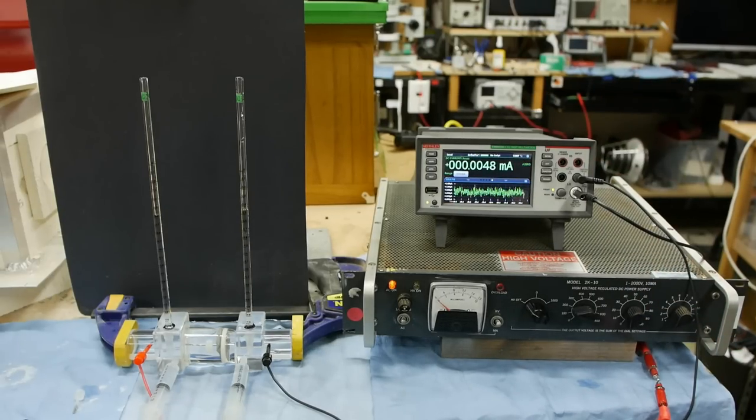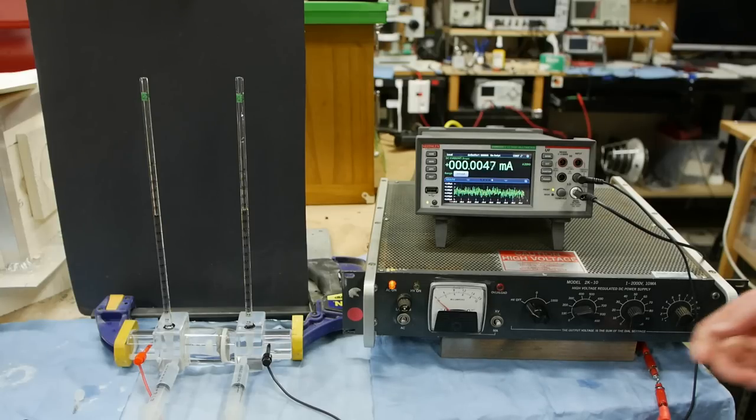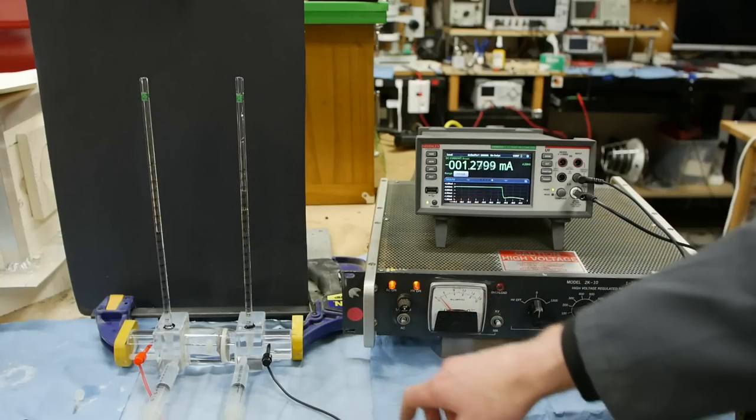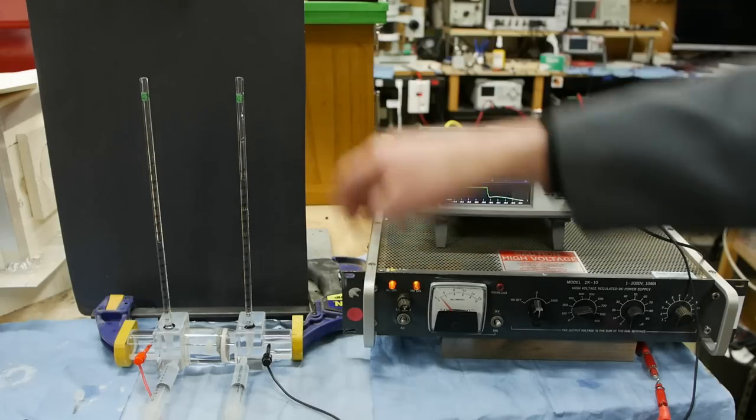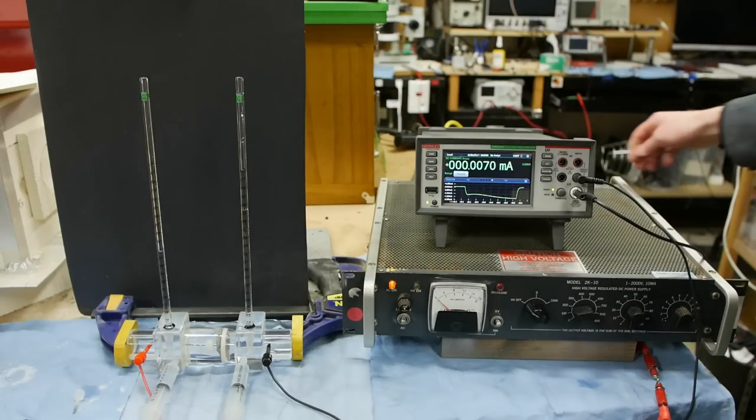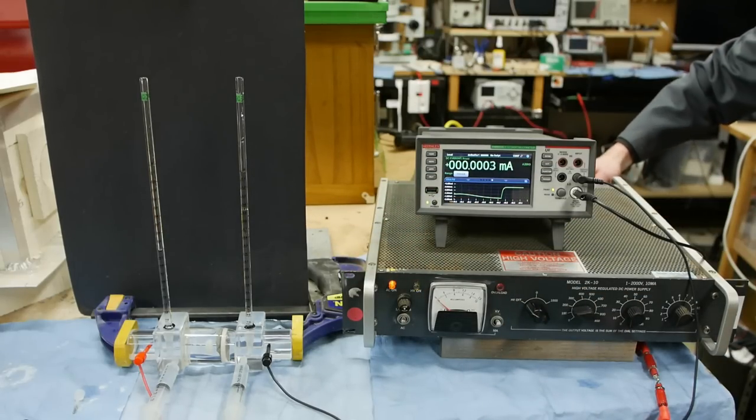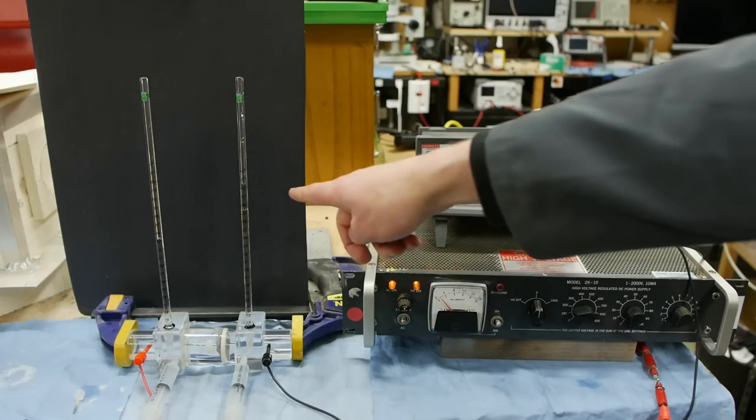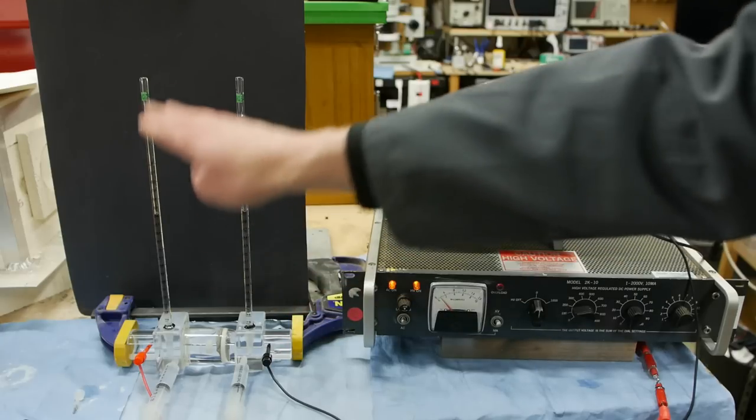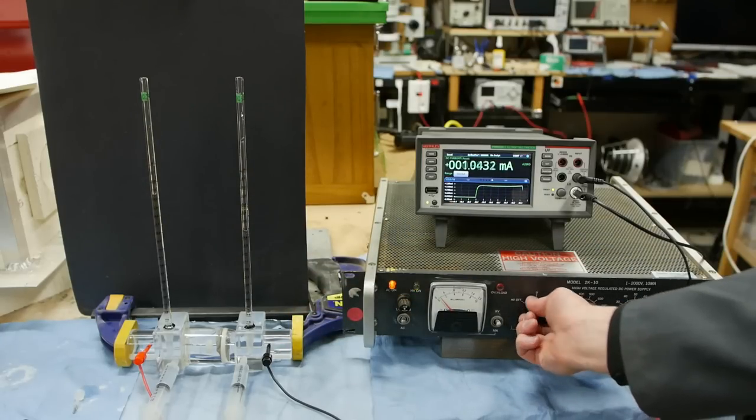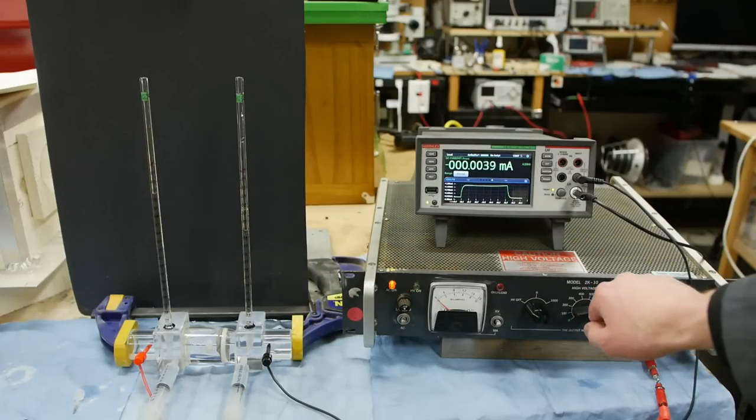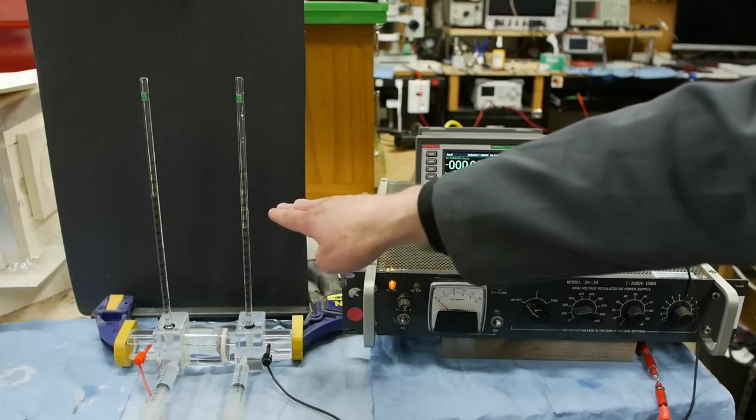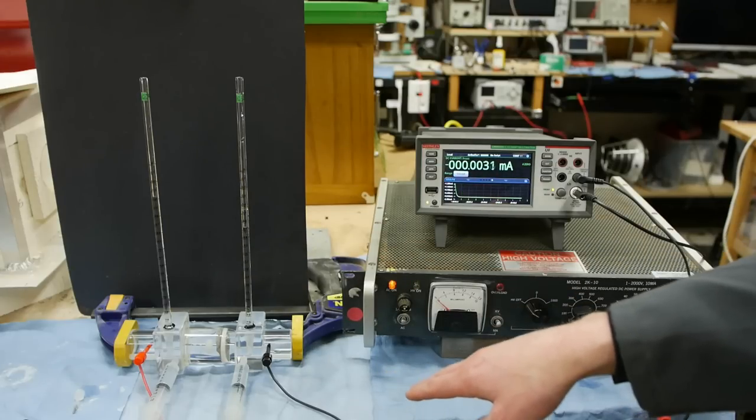As you might have guessed the direction of the water flow can be controlled by the electrical polarity. So if we do 200 volts in this direction negative on this side you can see the water column is rising on the right. And if I turn this off there's a switch on the back of this power supply that flips the polarity. So now if we turn on the water is pumping the other way. This is the right side's going down the left side's going up. One thing you'll notice is when I switch this off and there's no electrical field across here the water is very very slowly returning back to the equilibrium point.